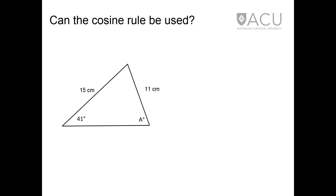In this triangle, there are two known sides and a known angle, but this known angle is not the included angle between the two known sides. The other two angles are not known, so the cosine rule cannot be used to find angle A.